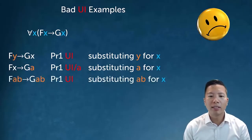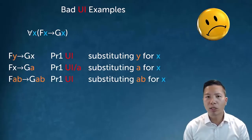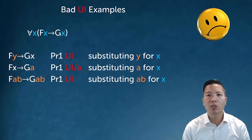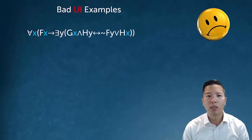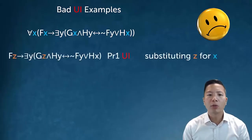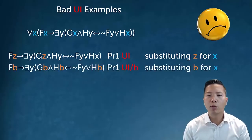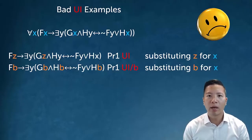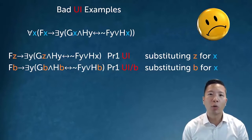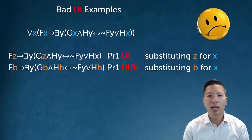In another bad example, I did substitute something for both instances of x, but I substituted two different things — name a and name b — which means I tried to put two things into a predicate that can only have one, violating the condition that you can only substitute a singular term in a universal instantiation.